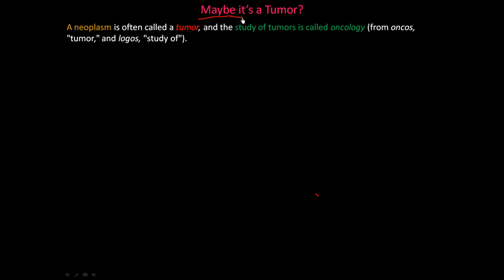So maybe it's a tumor. What is a tumor? A neoplasm is often called a tumor. When you hear the words tumor, neoplasia, neoplasm, or cancer, it's kind of all the same thing — there are just a lot of different words for it. Tumor is the same thing as neoplasia, neoplasm, and cancer. The study of tumors is called oncology, from onkos meaning tumor and logos meaning study of.